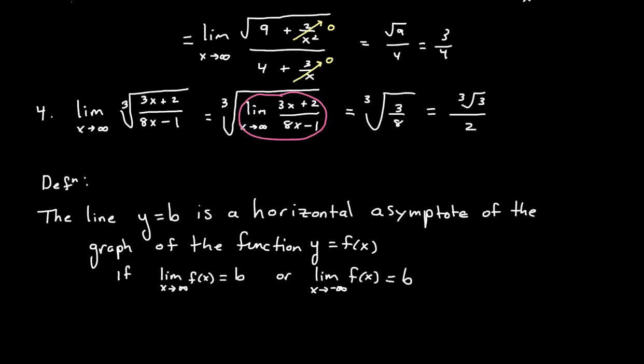We'll finish this part of the notes with a definition: the line y equals b is a horizontal asymptote of the graph of the function y equals f of x if the limit as x goes to infinity of f of x equals b, or the limit as x approaches negative infinity of f of x equals b. The first refers to the far right end of the x-axis, and the second refers to the far left end of the x-axis.